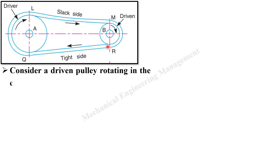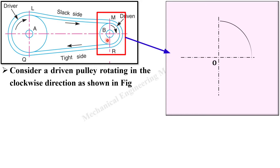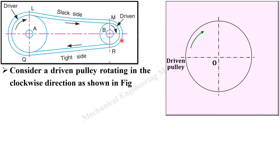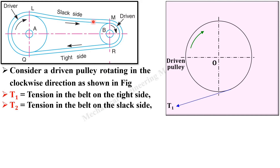Consider a driven pulley rotating in the clockwise direction as shown in this figure. I am going to draw the driven pulley at approximately 2x zoom so that we can analyze it exactly. T1 is the tension in the belt on the tight side and T2 will be the tension in the belt on the slack side. Keep in mind T1 is always greater than T2.